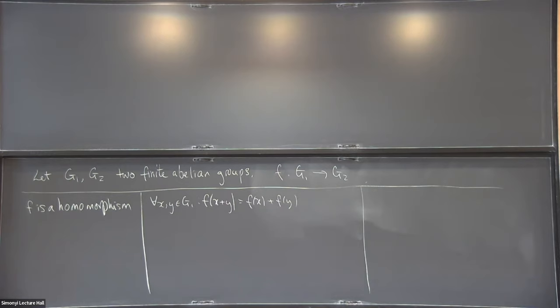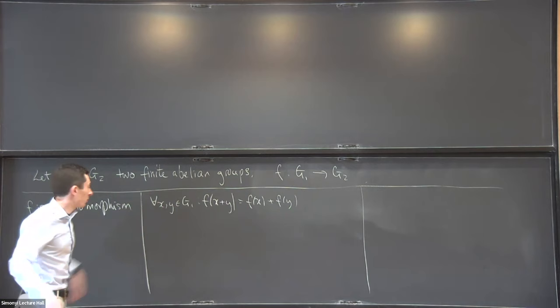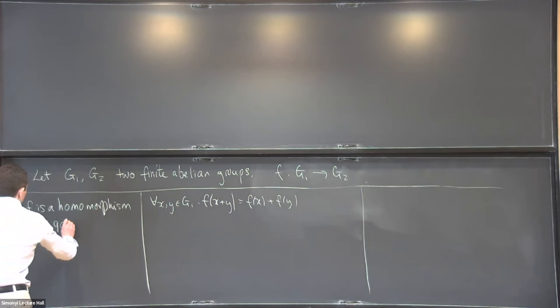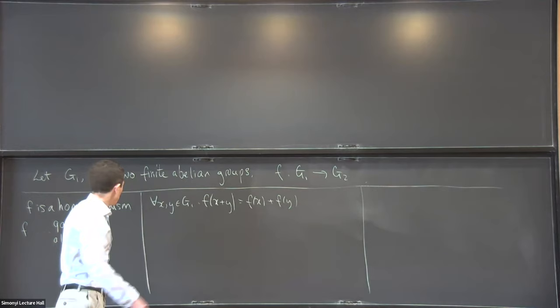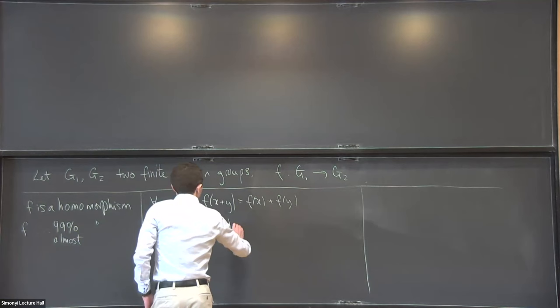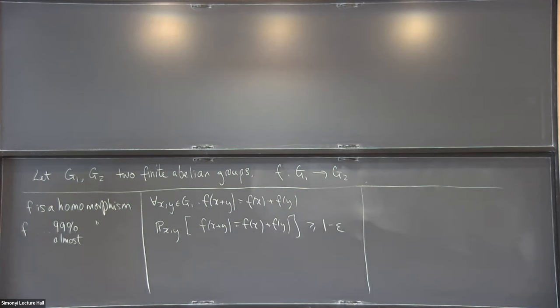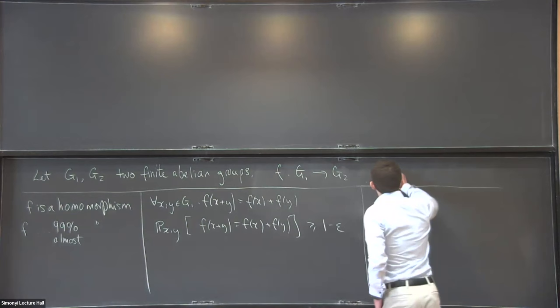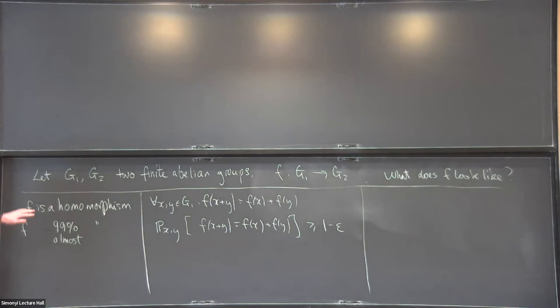Everyone knows what a homomorphism looks like. One thing you can ask is: what if instead of insisting the homomorphism condition holds for every pair x and y in G1, it just holds for most pairs? So let's say f is a 99% homomorphism — or an almost homomorphism — if, choosing x and y uniformly at random from G1, the probability that the condition holds is at least 1 minus epsilon. Think of epsilon as being 1/100 or something.